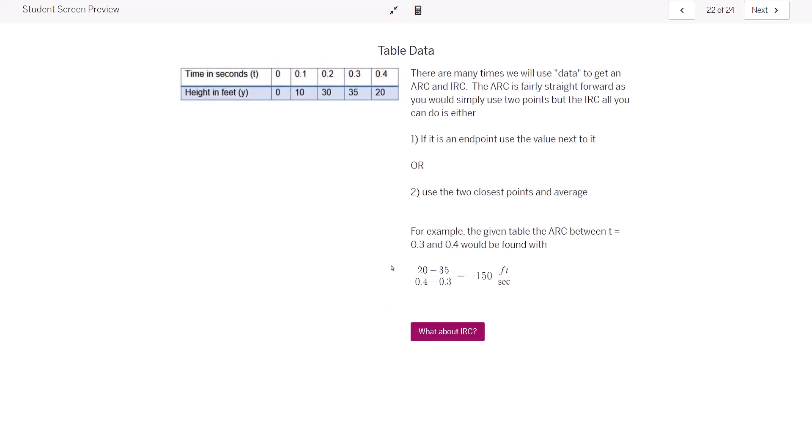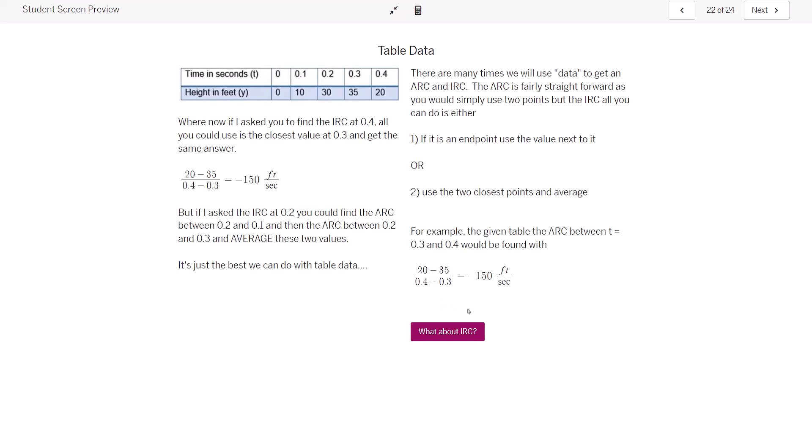Anytime you deal with table data, I mentioned this at the beginning with the card sort, is it's pretty easy to find the slope between two points. It'd be pretty easy to find that. But what if I asked you to find the instantaneous rate of change at exactly 0.4 seconds? Well, there's no, you can't use the limit formula because you don't have a function. So all you want to do, in this case, is use what is closest. And in this case, it would be this value. If it was something like 0.2, then you have two values closest. And so you would find the ARC for both and you would average them.